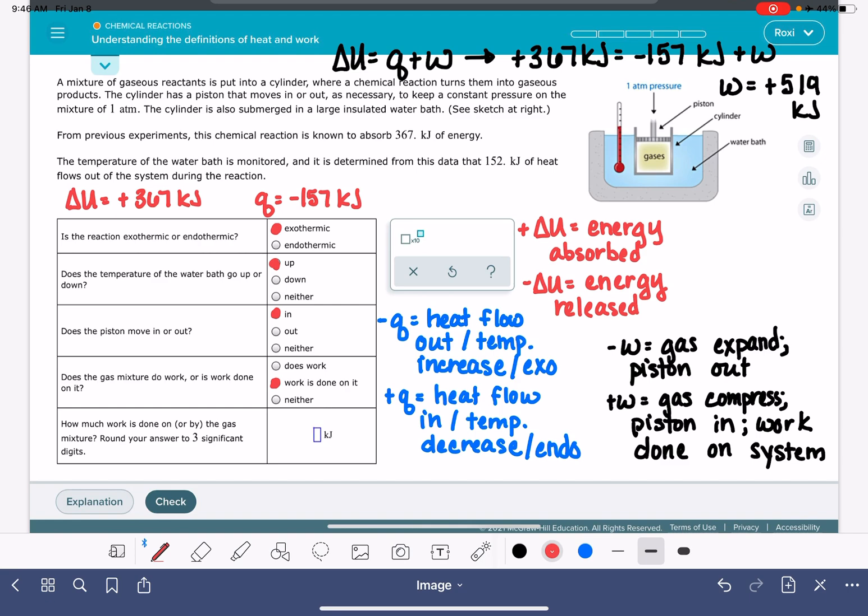How much work is being done? Well, we already calculated that up here. The way that this problem is worded, it wants an absolute value. Ours is positive in this situation, but if it was negative, it just wants the absolute value.